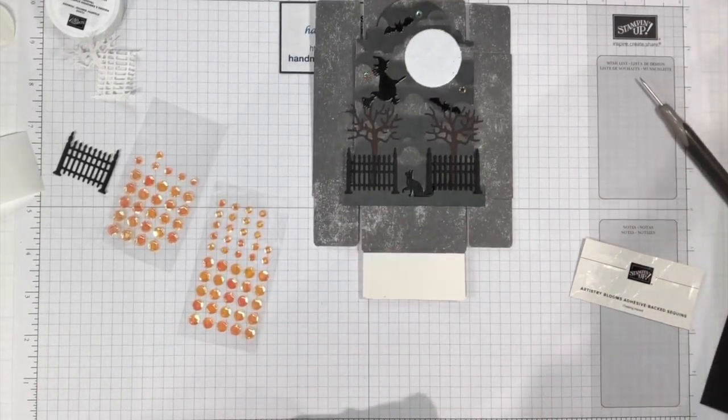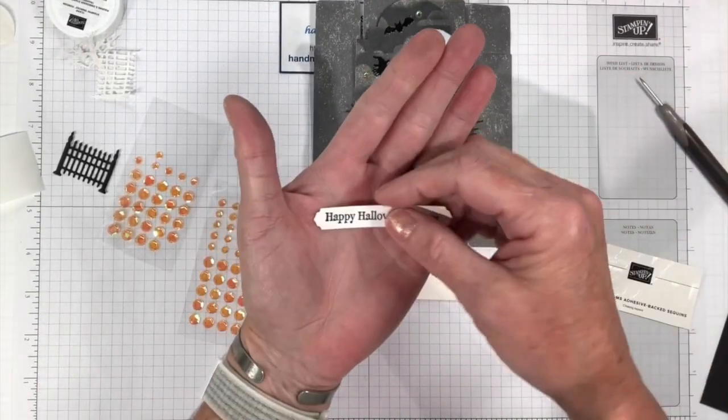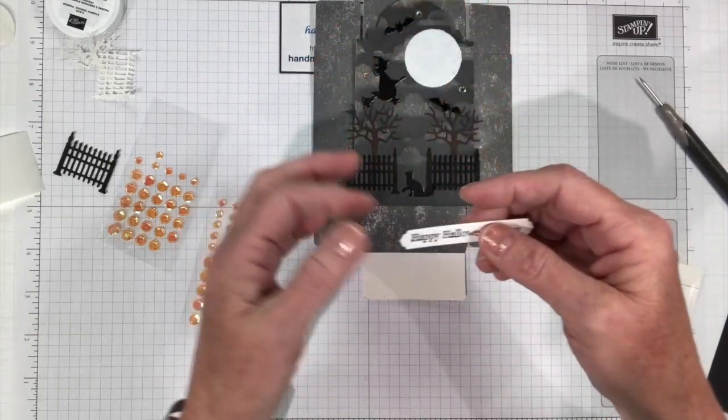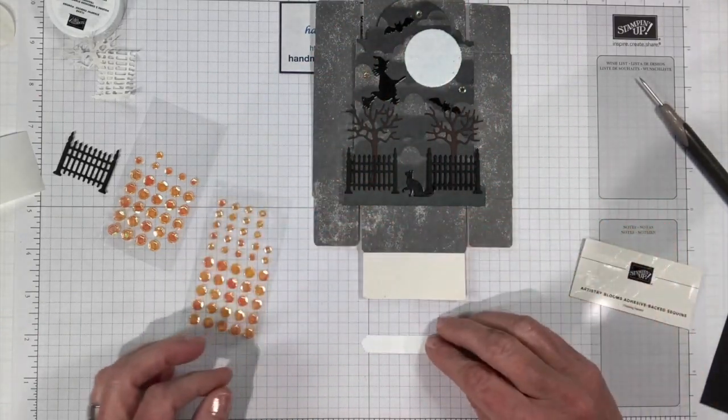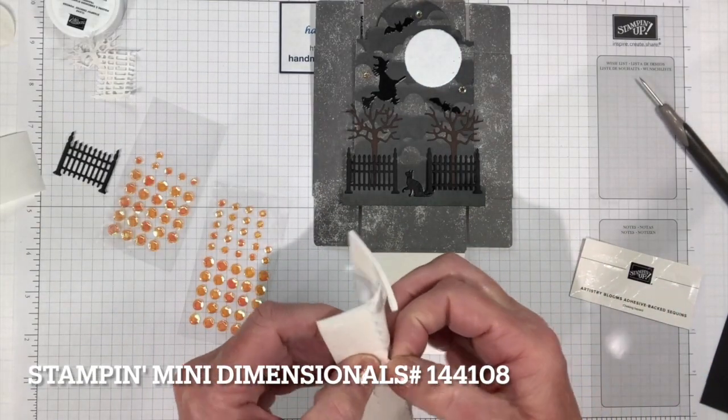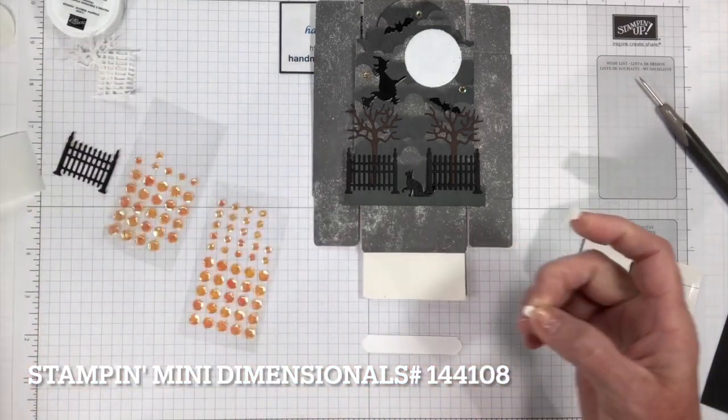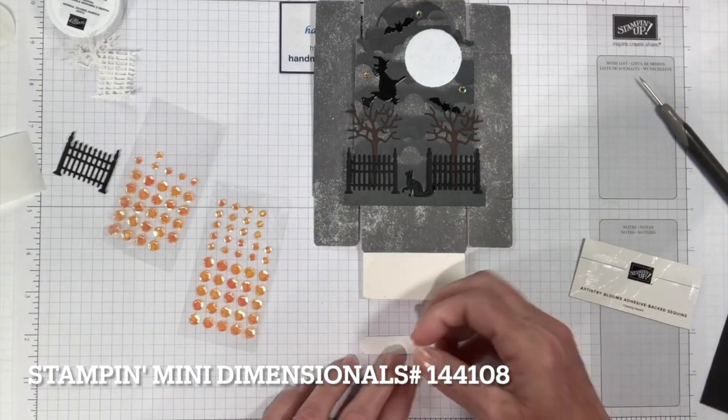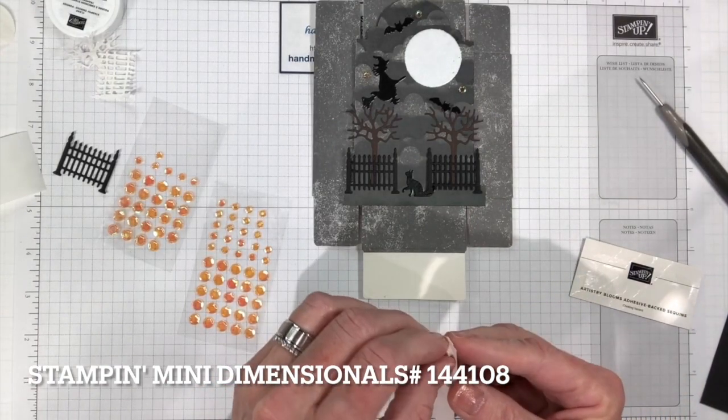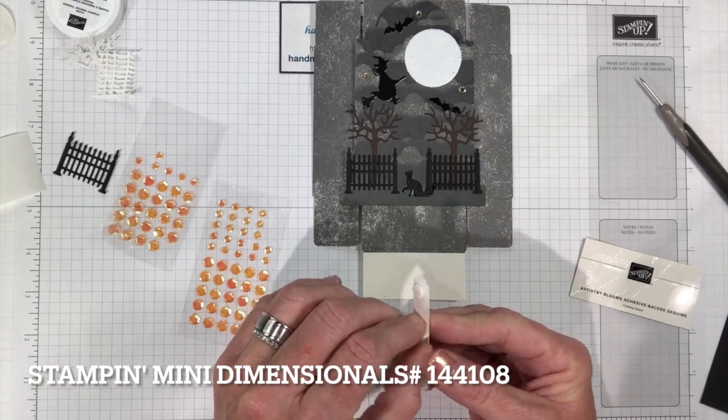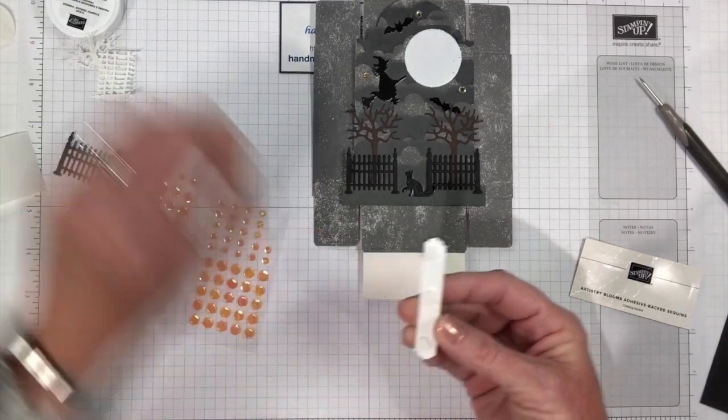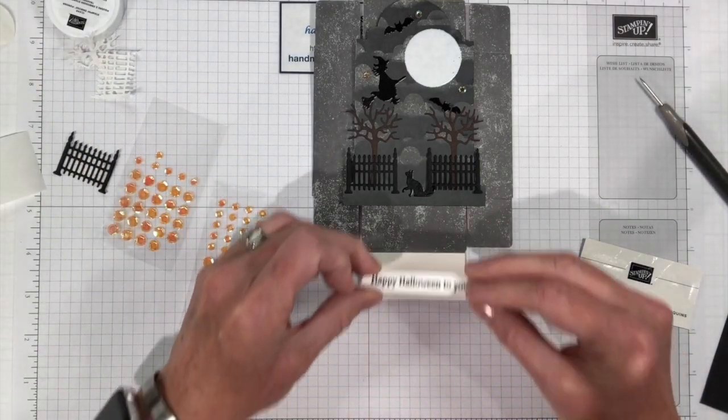There we go. And then we need to add our sentiment. I did already pre-prep this. I just stamped the sentiment and then cut it out with the sentiment die. We're going to add some dimensionals here. We just really need three. I've got the mini dimensionals that we're using here because it's a smaller sentiment strip. Get the backing off of there.